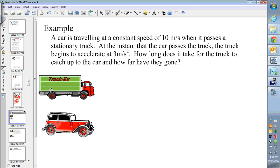So the car is traveling at a constant speed. So the speed of the car is 10 meters per second. So let's call it VC, V car. At the instant the car passes the truck, the truck begins to accelerate. The truck was standing still, so the initial speed of the truck was zero. It's accelerating at 3 meters per second squared and we don't know how long it is doing that for.